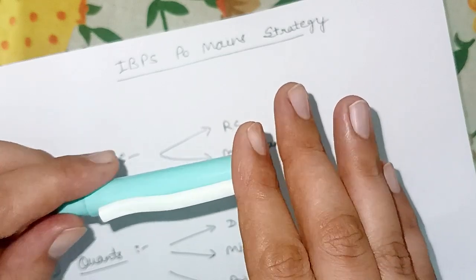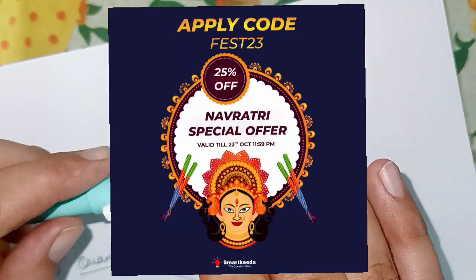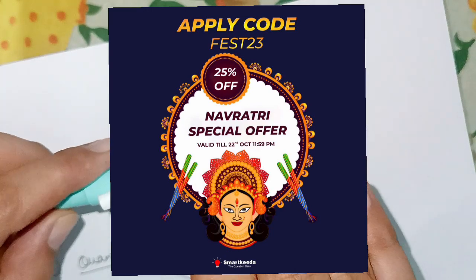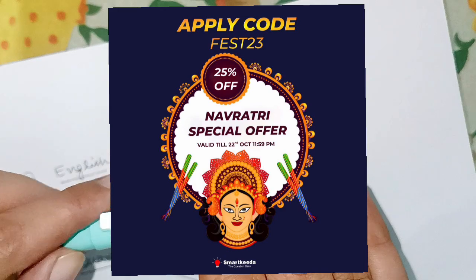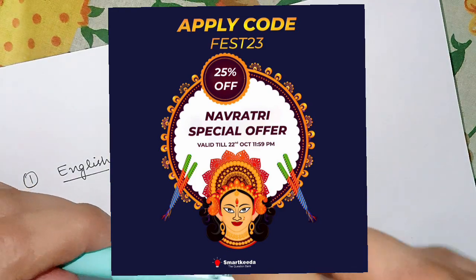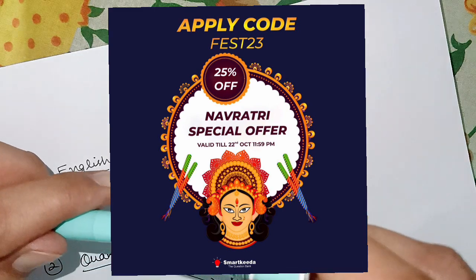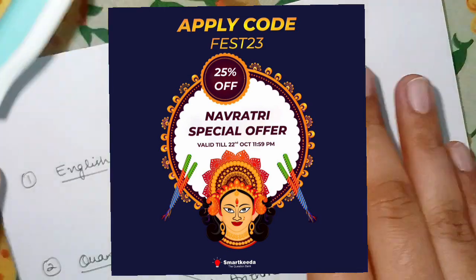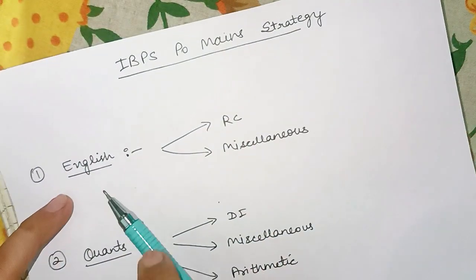First of all, I want to inform you that there is 25% discount going on on Smart Kida and this is valid till 22nd of October. This is the maximum discount they are giving and if you are planning to buy their test series then it is the best time. You will find the link in the description and the code is FEST23. So if you use this code you will get 25% discount.